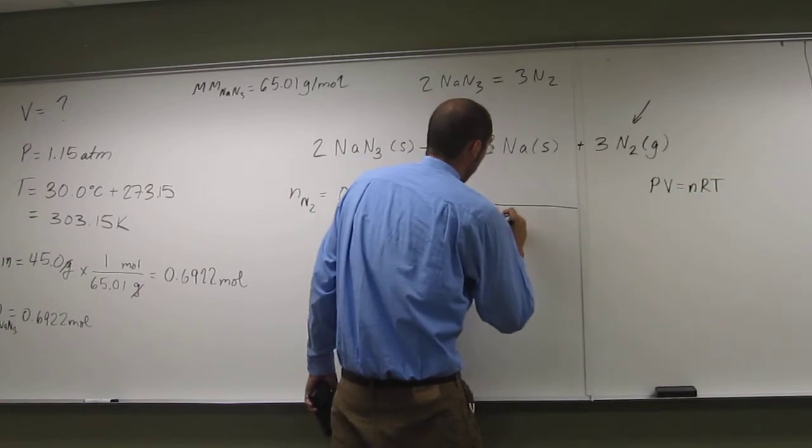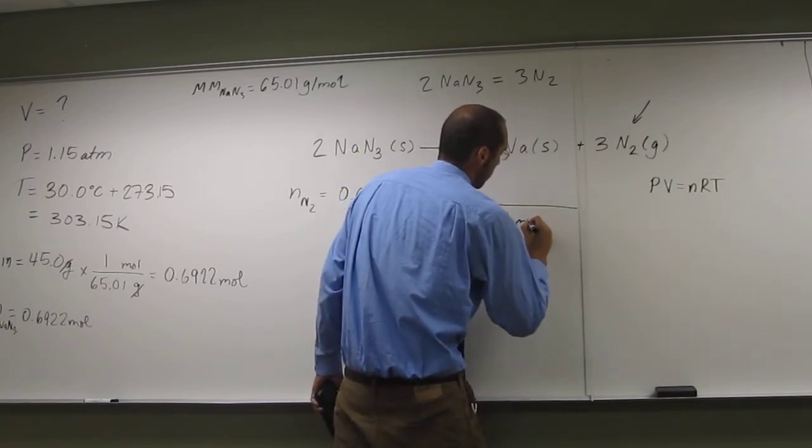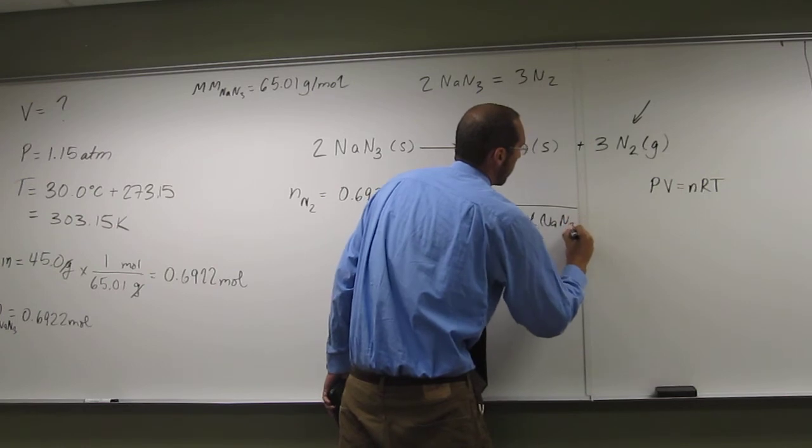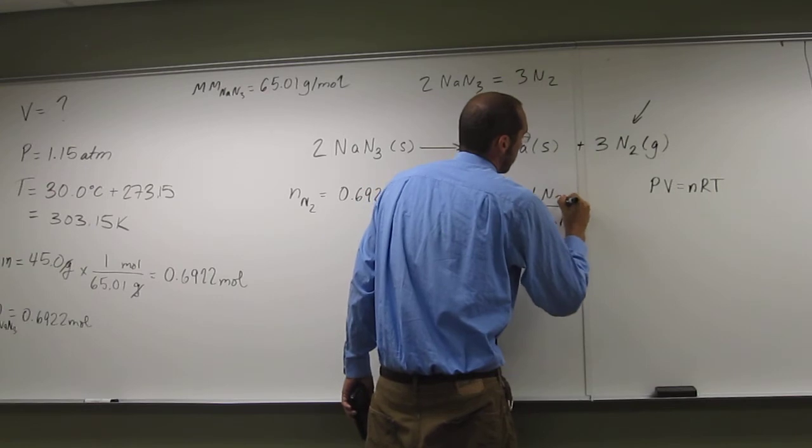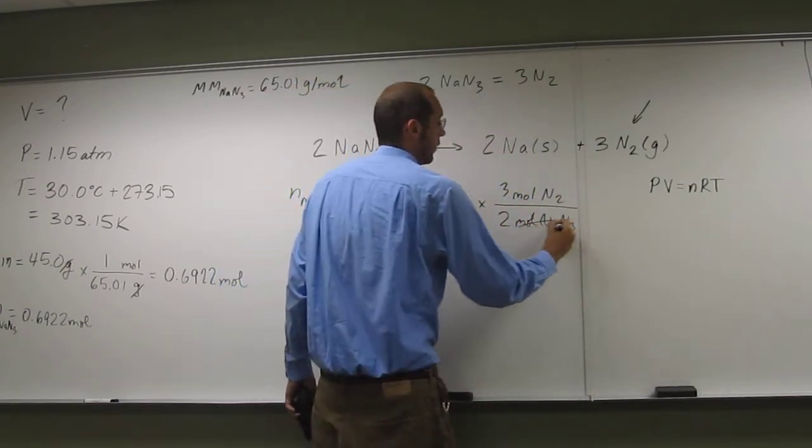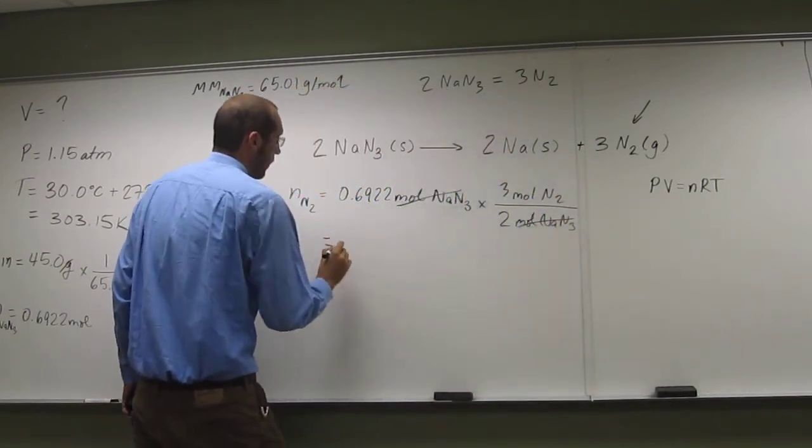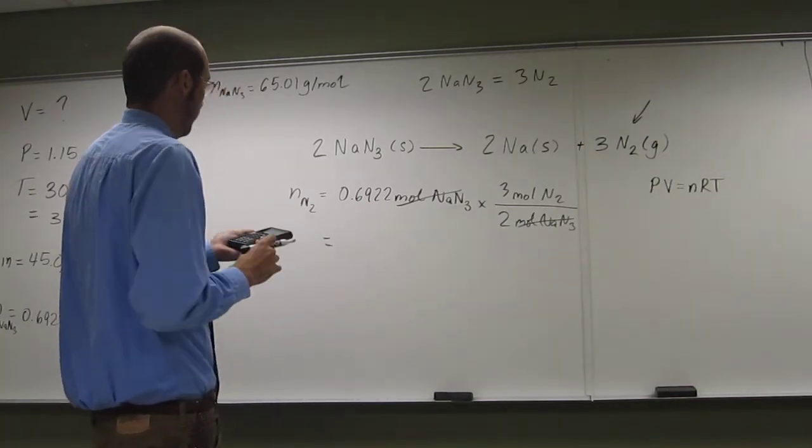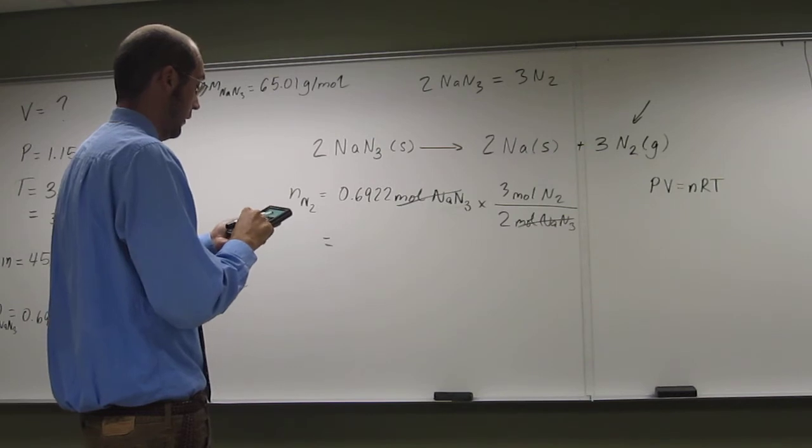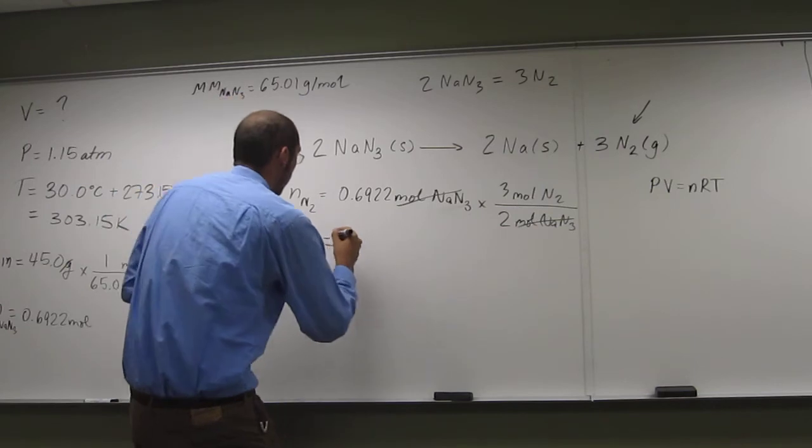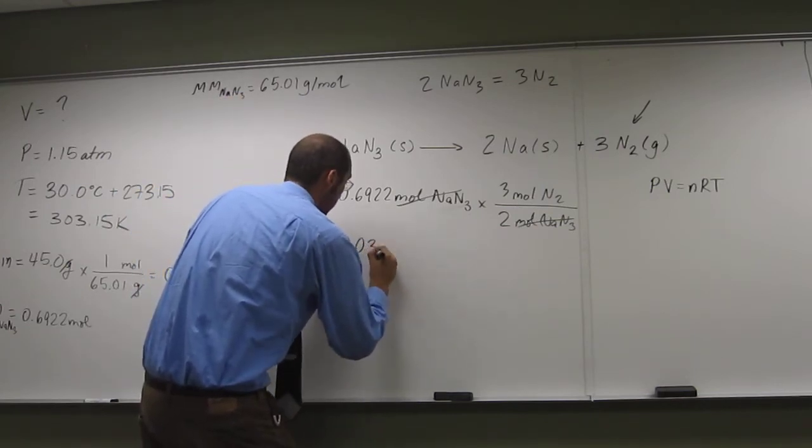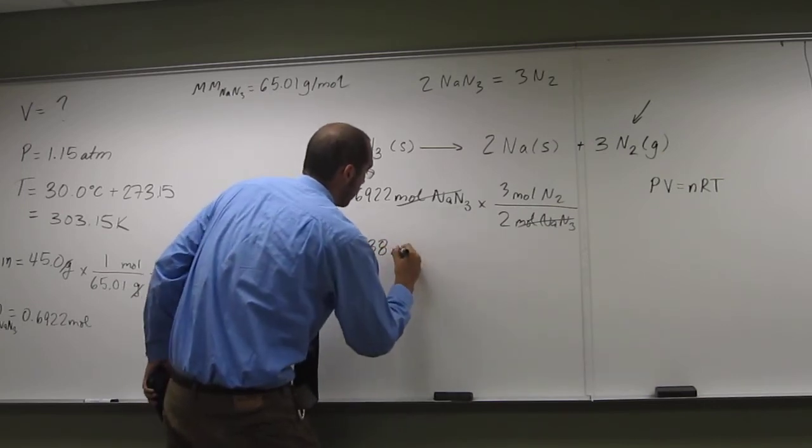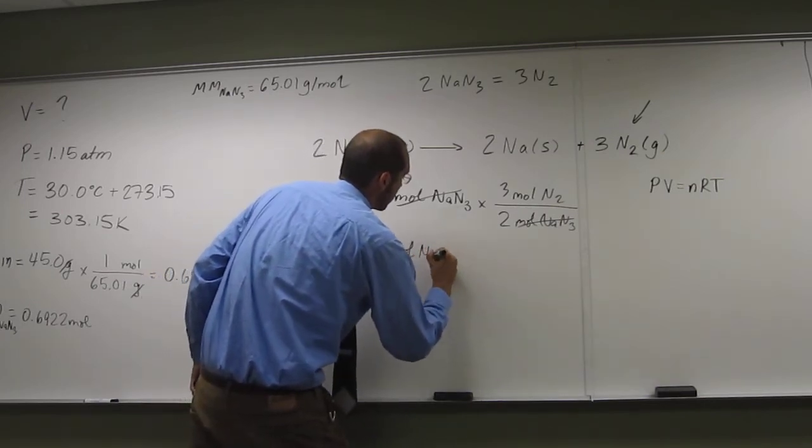So we want to put two moles NaN3 at the bottom, three moles N2 at the top. Notice moles cancel, cancel, and all we got to do is, so I have one of these calculators that will keep my answer in there. So I'm just going to take the answer times three divided by two, and I get this answer. So zero point, or 1.038, we'll take it too. So that's the number of moles of nitrogen now.